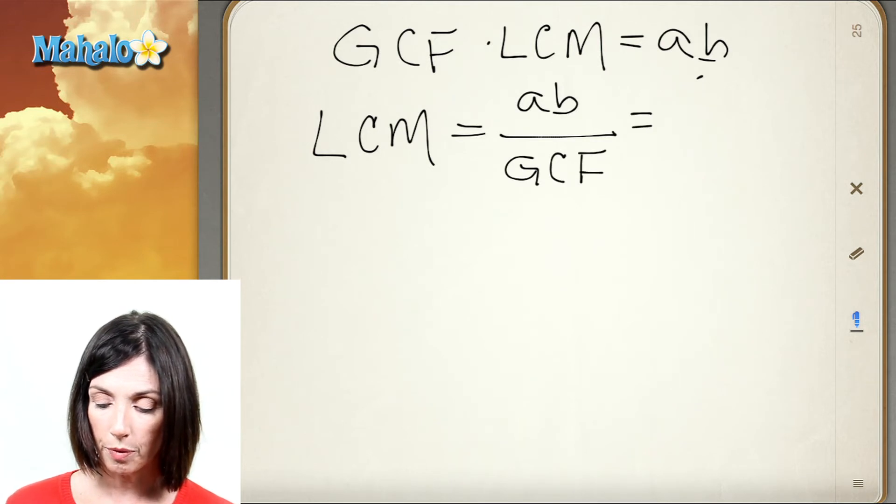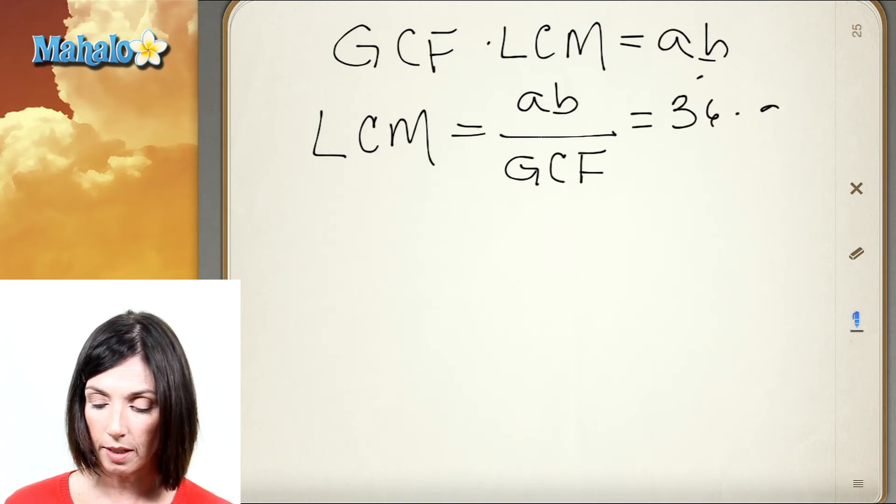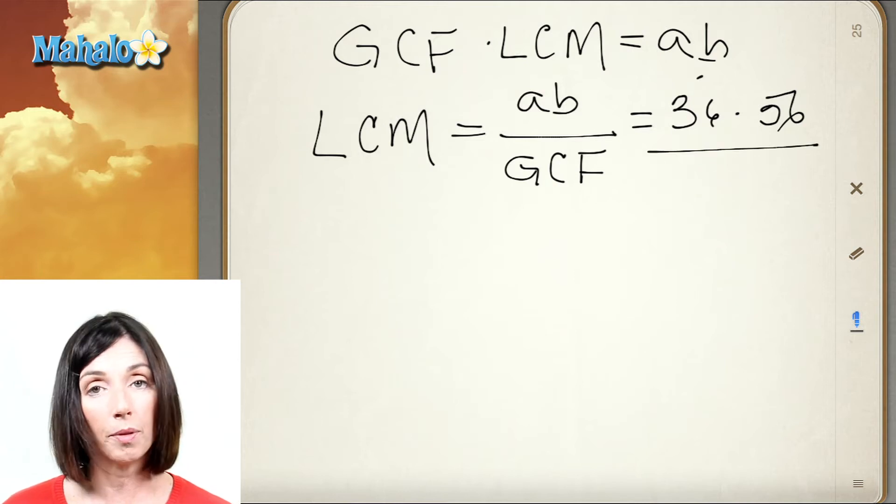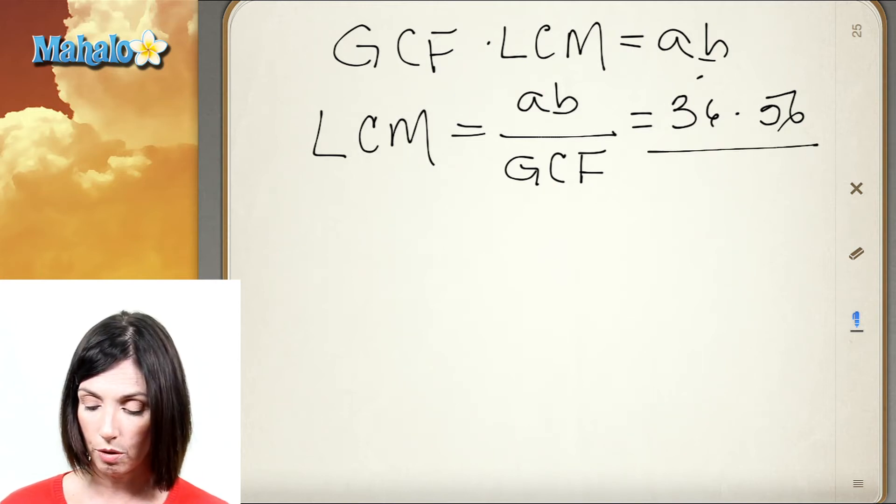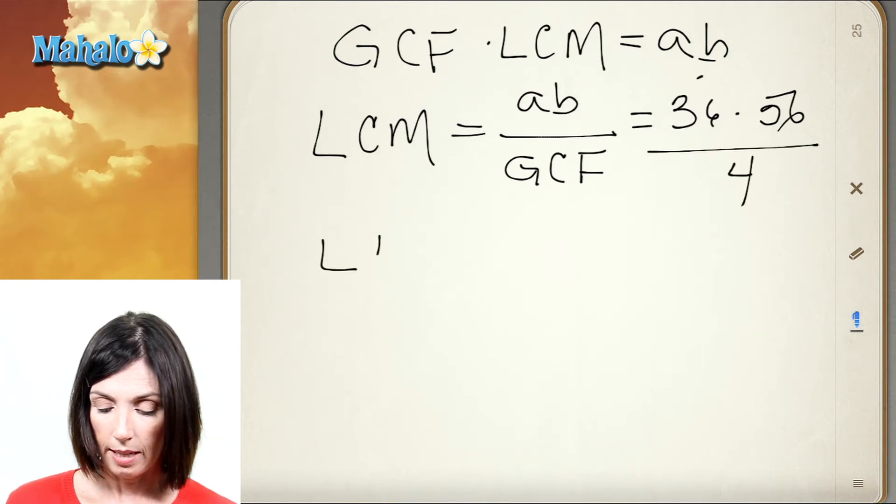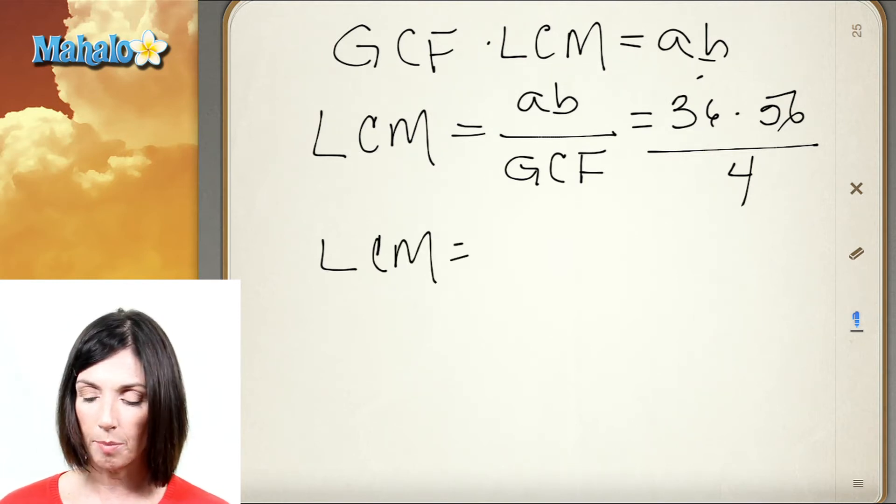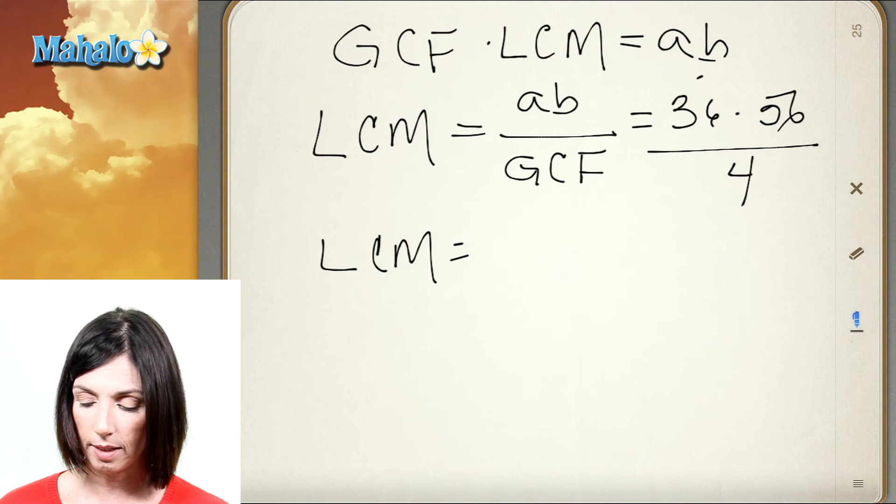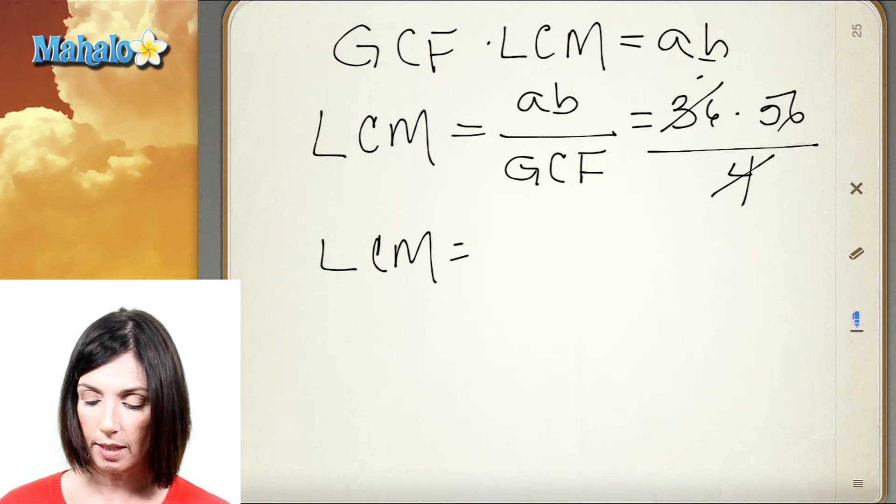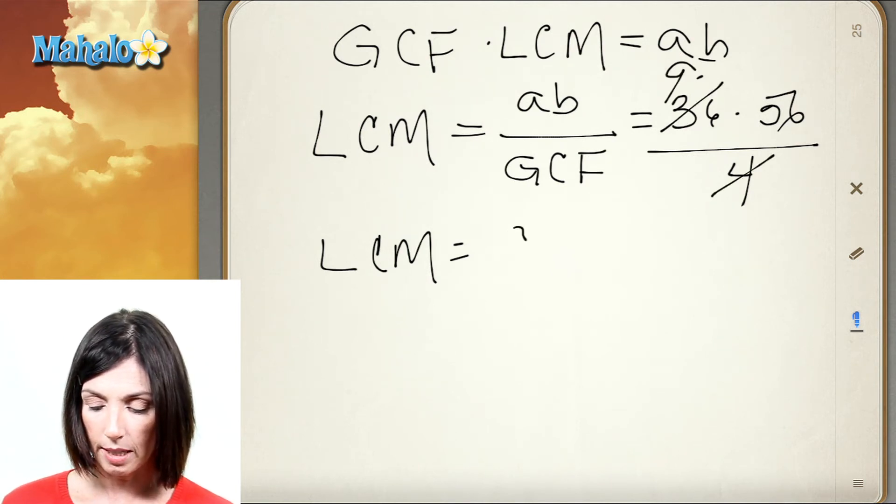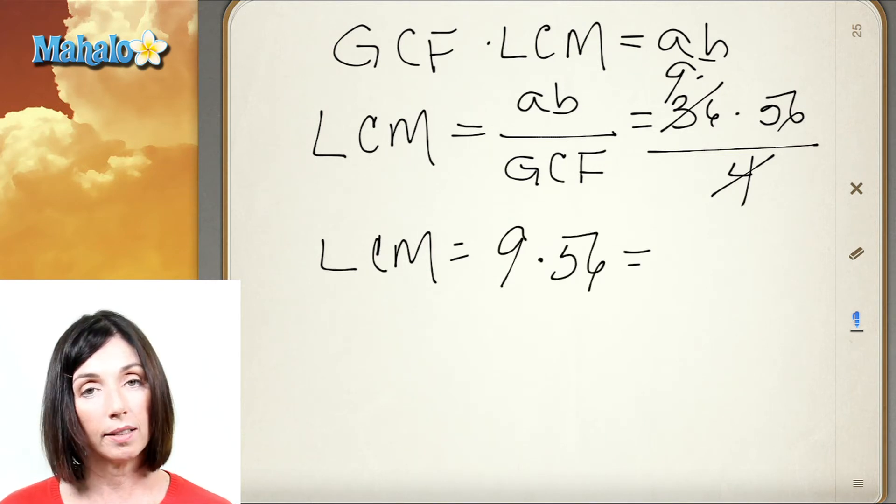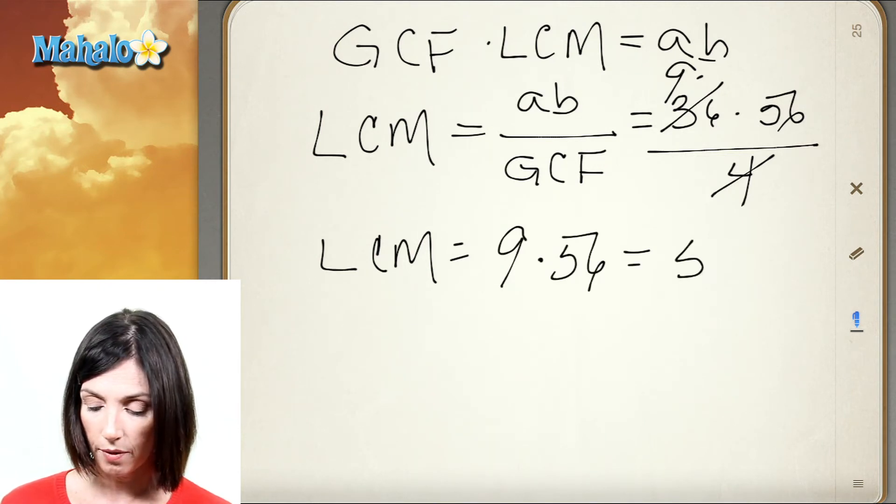Okay, so my two numbers were 36 and 56, and my greatest common factor was 2 times 2, which is just 4. Now, instead of doing this multiplication of 36 times 56, I'm going to do a little canceling because it's easier. 4 goes into 36 9 times. So the least common multiple is 9 times 56. And when I multiply 9 times 56, I get 504.